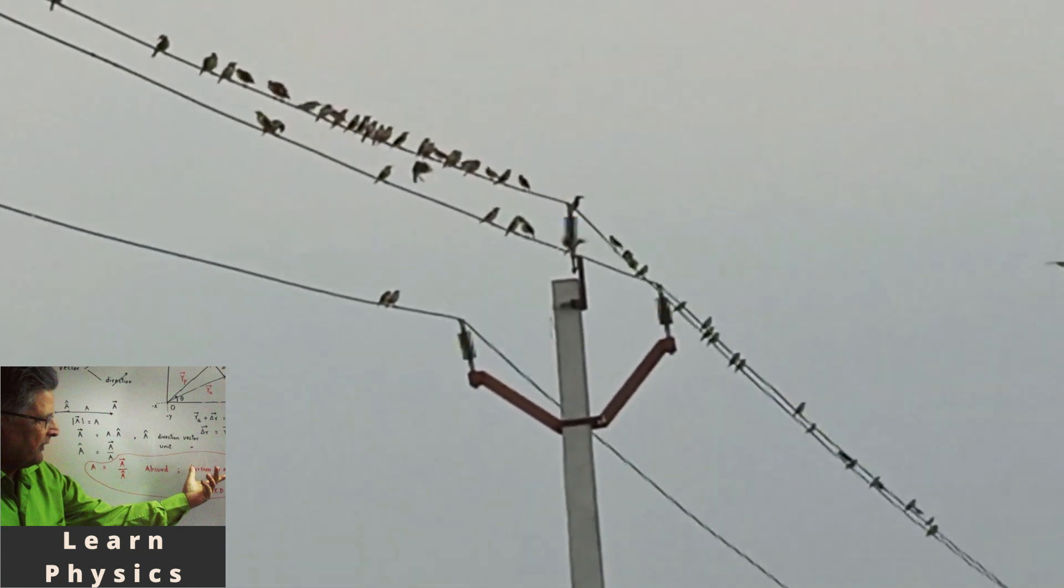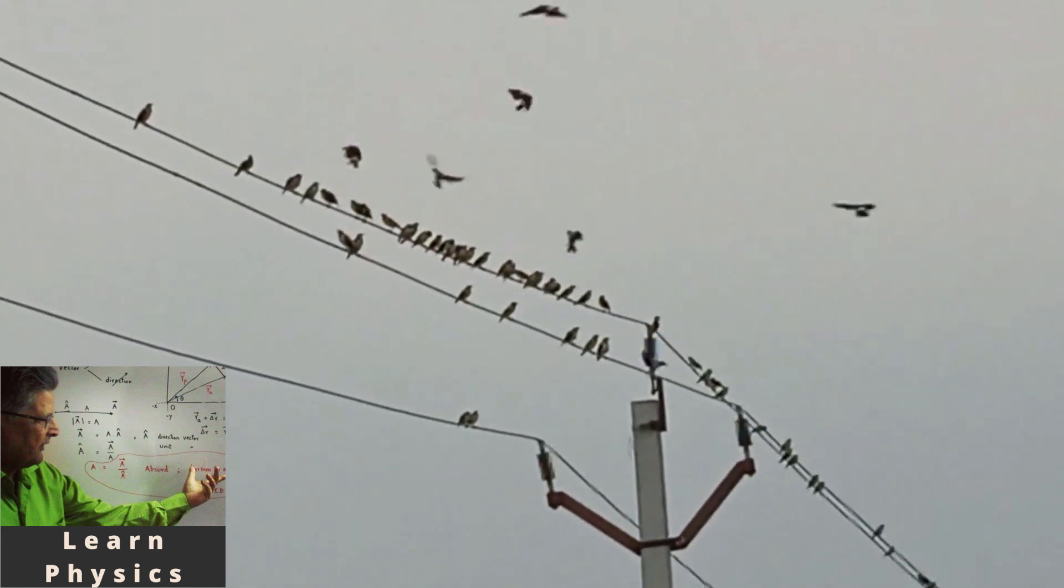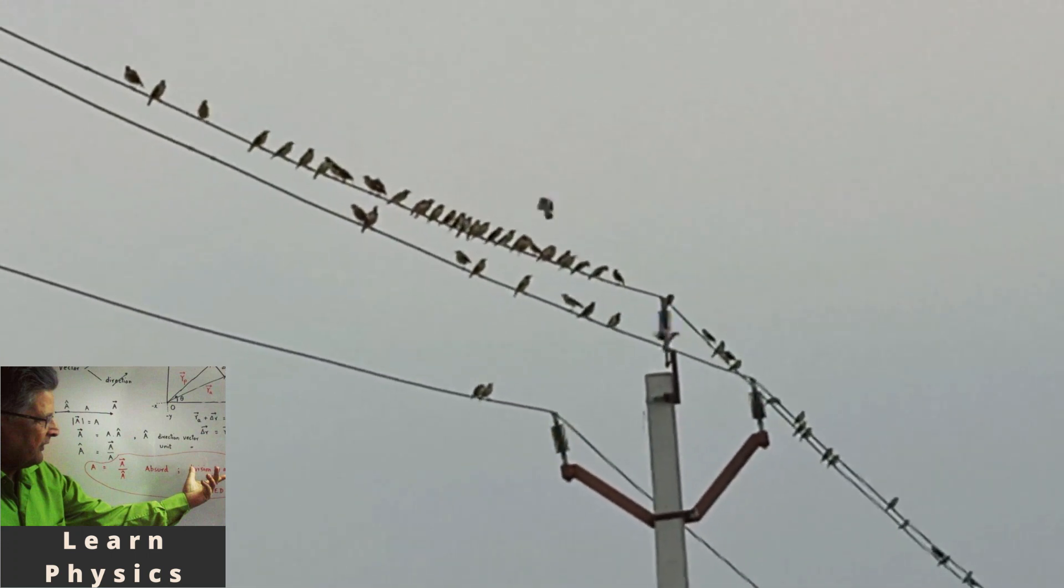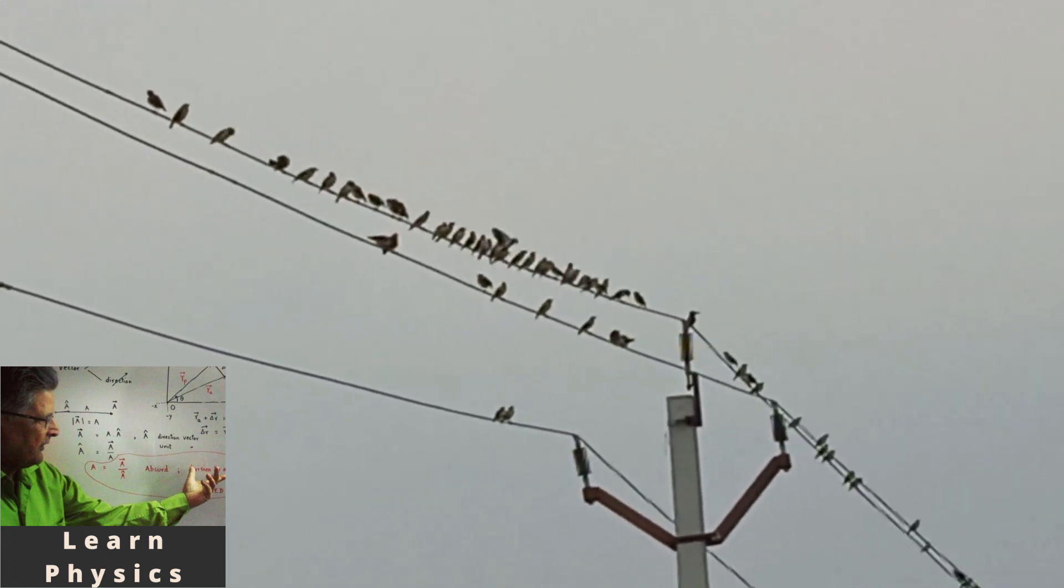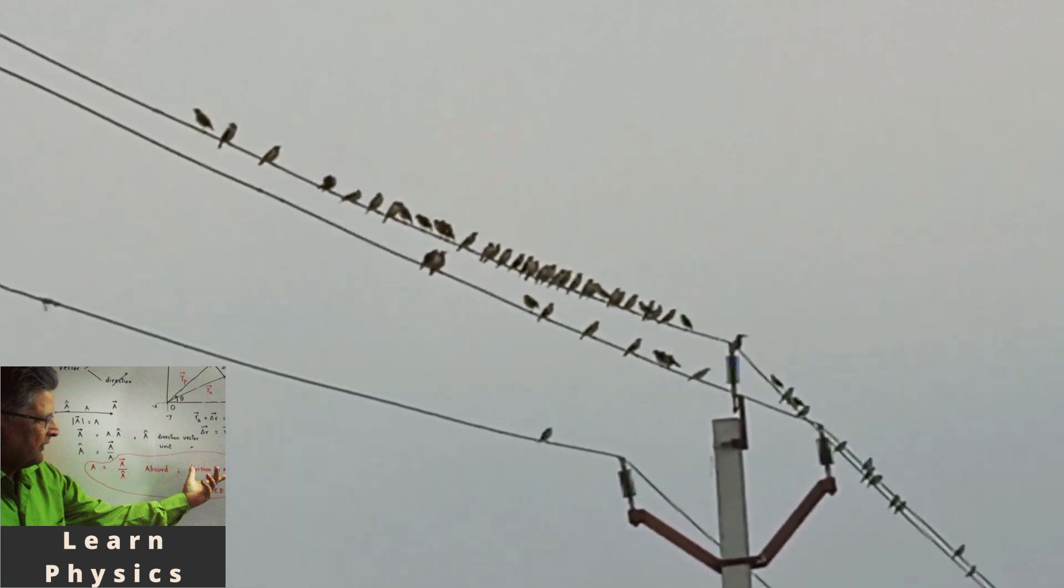And because the resistance of the wire is too low as compared to the resistance of the bird, therefore any current that flows through is negligibly small.